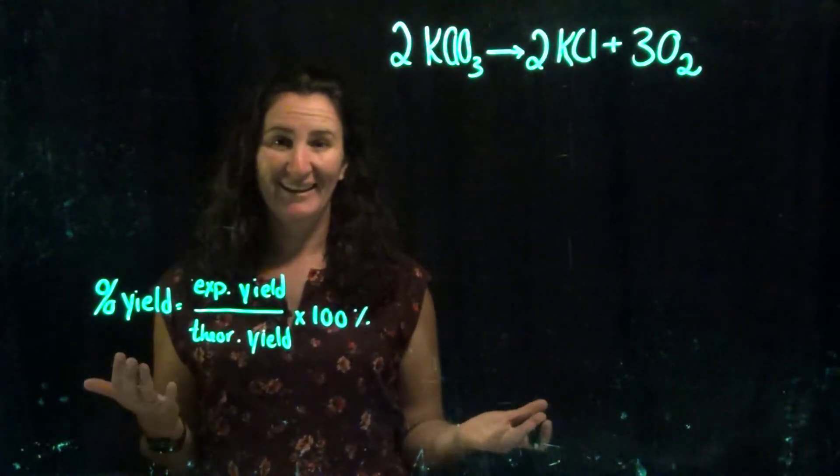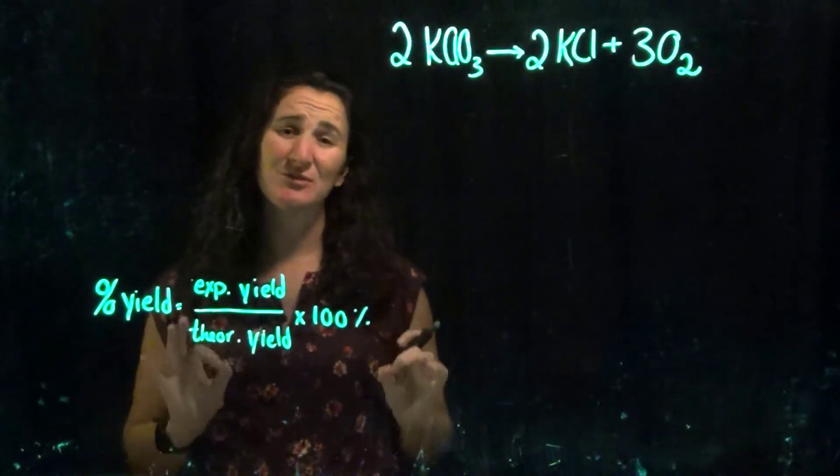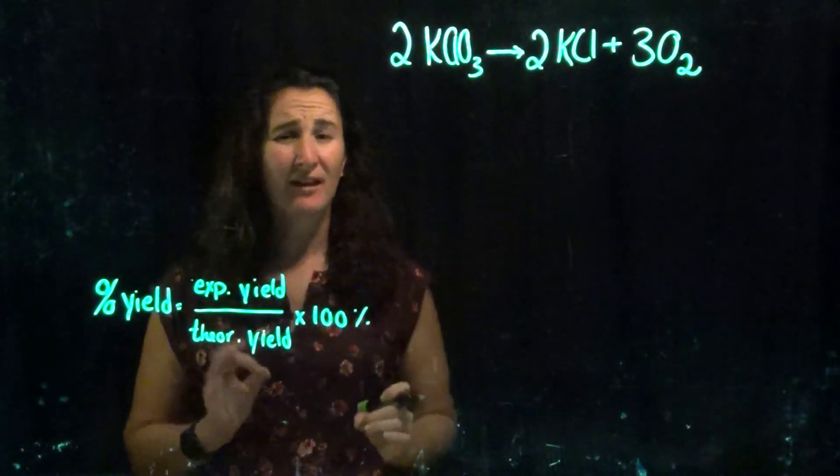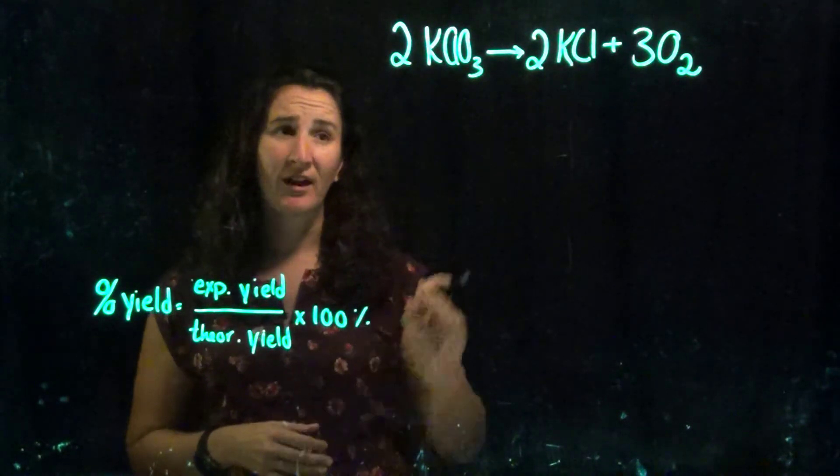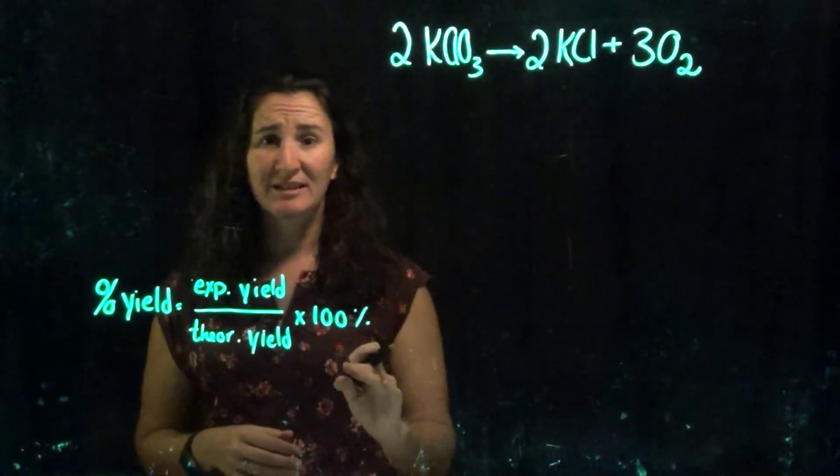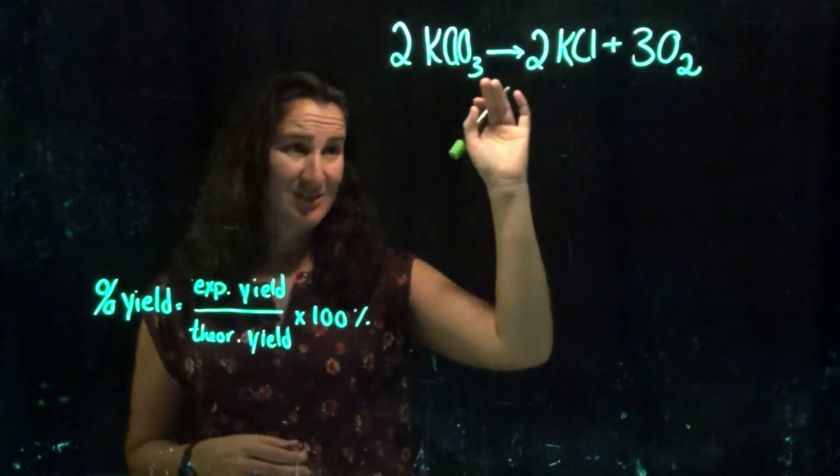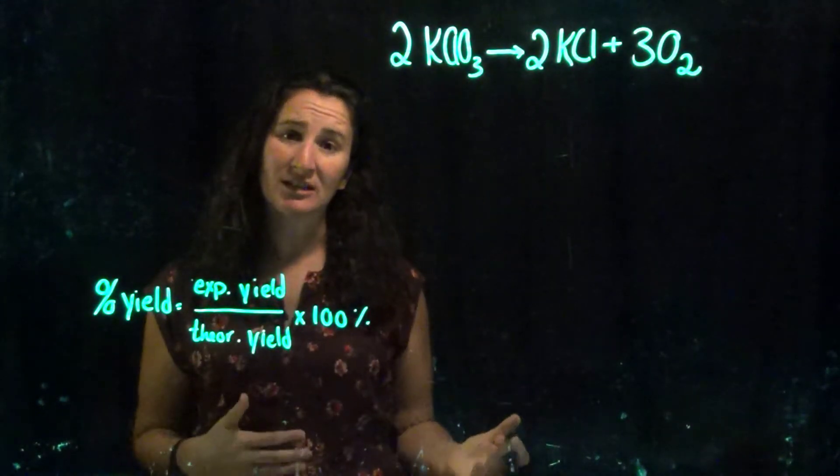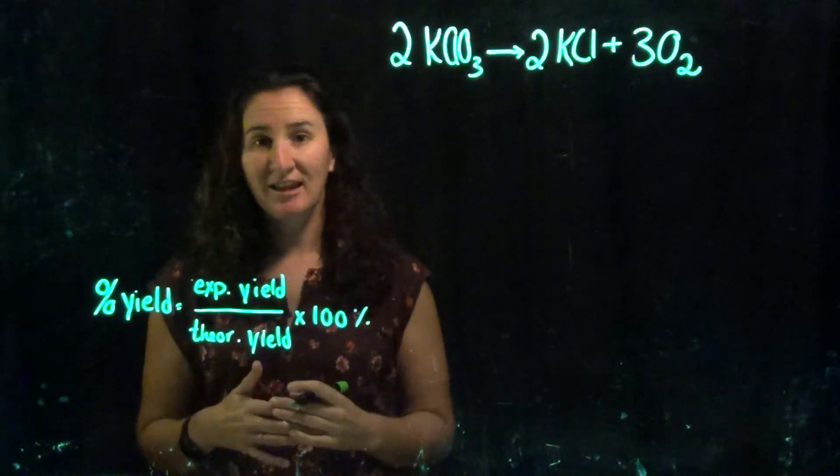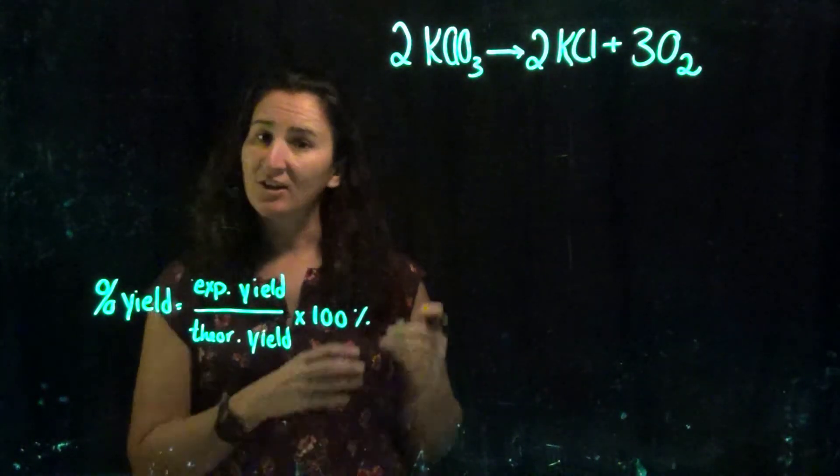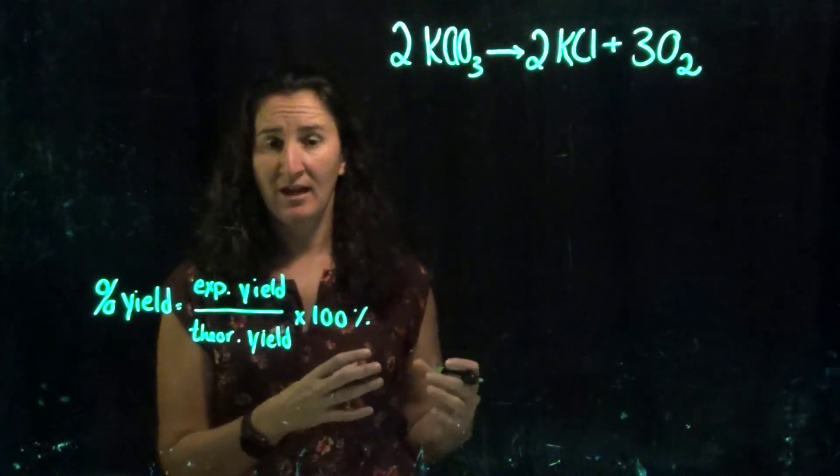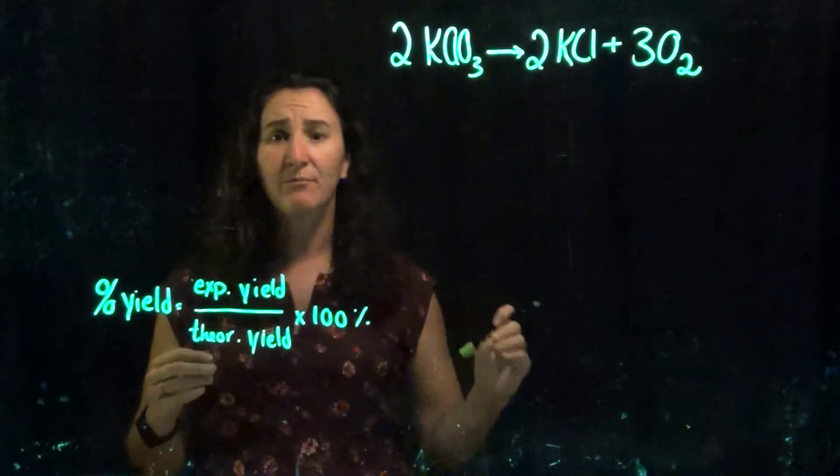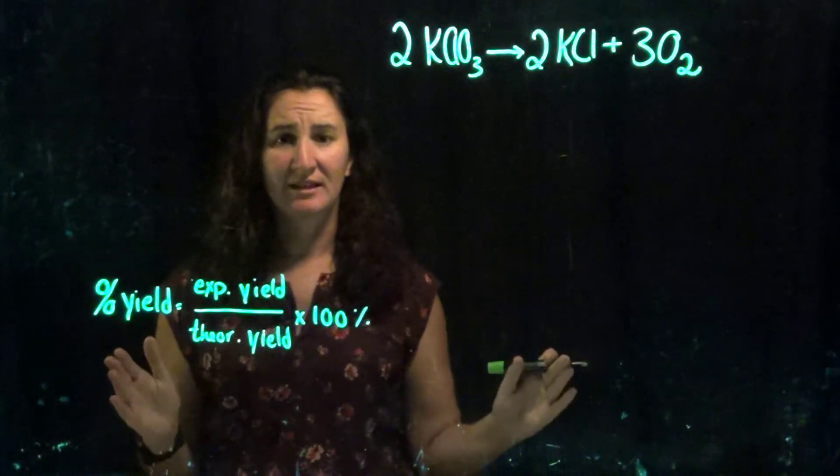But why would you care about that? Percent yield, why do we care? It's a huge money maker. That's why. Because if I can take one gram and generate 0.1 grams of potassium chloride, that may not be good enough and it may not be profitable. Whereas if I could take my one gram and have a 99% yield, which means 99% of this is used to generate potassium chloride with not a whole lot of waste or incomplete reactions, then I'm going to be a lot more efficient in my process. And so a lot of chemistry is dedicated to how can I improve my percent yield if I need to create this synthetic drug. How can I make that in the lowest number of steps, with the lowest number of byproducts, with the highest possible percent yield?